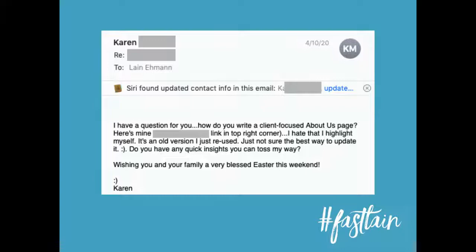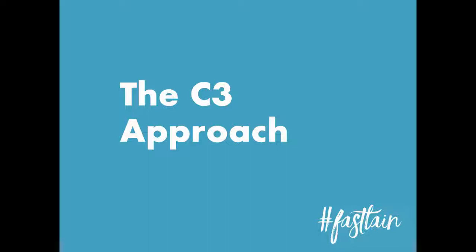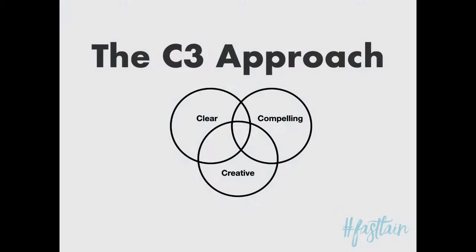I want to introduce you to the C3 approach to writing copy. This works for blog posts, emails, and sales pages, and today we're going to apply it to the About Us page on your website. The C3 approach involves three interlocking guiding principles: clear, compelling, and creative. What you write should hit all three of these circles and be in that sweet spot in the middle.